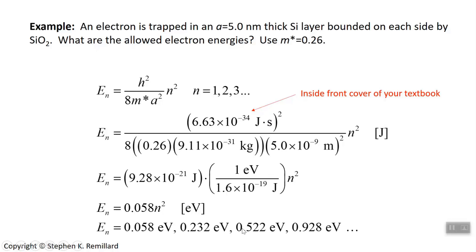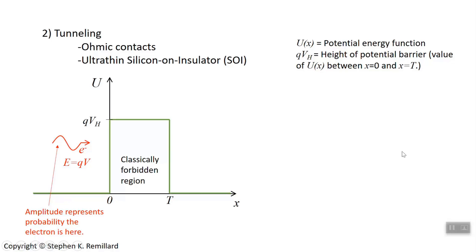Now we have energy levels equal to 0.058 times n squared electron volts, where n is any integer from one to infinity. Those are all the energies that an electron can have in that situation — the energies associated with bounding of the electron between zero and five nanometers. This is an application of the particle-in-a-box problem to a real situation. We'll come back to this later when we discuss extremely thin silicon-on-insulator. The next topic is tunneling.